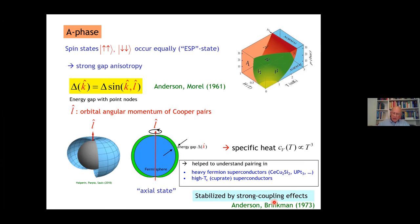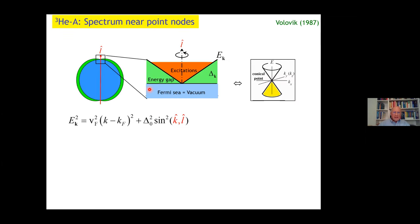As Anderson and Brinkman explained, the pair interaction depends on the pair correlation itself. There's a feedback mechanism that stabilizes this A phase at high pressures where fluctuations are particularly strong.